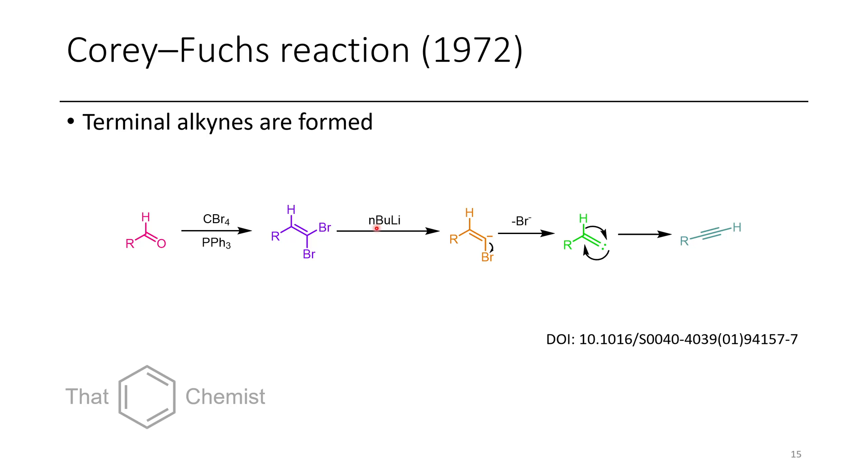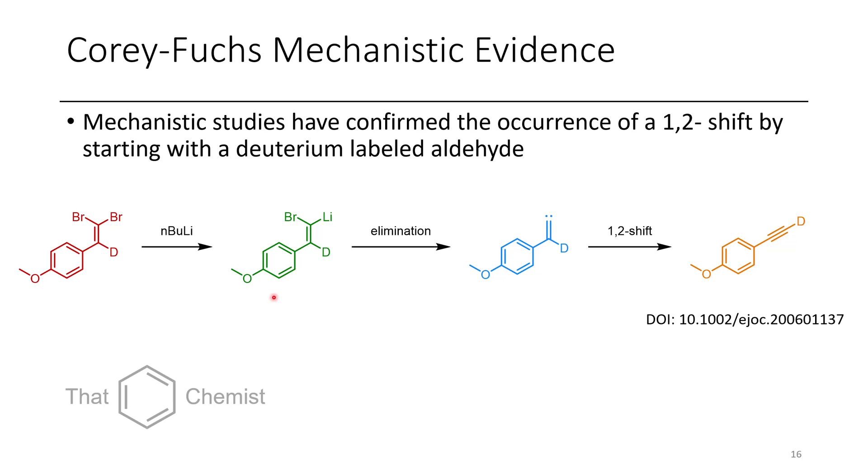Now you might say, because you're using n-BuLi as a base, that this is just deprotonating this proton, forming an alkyne bromide, and then the n-BuLi is reacting with the alkyne bromide. But there's been mechanistic studies done showing that actually the deuterium in this alpha position is converted to the deuterium on the final position. So this isn't like an acid-base reaction, because if n-BuLi was deprotonating that deuterium, you just have like monodeutero-butane, and that's not going to be a good enough acid to protonate the final product. So this is a 1,2 shift process.